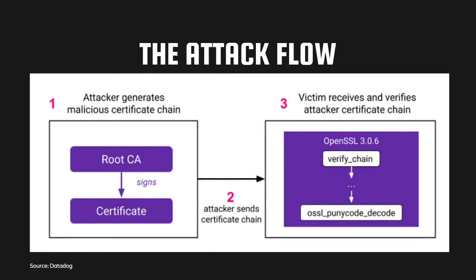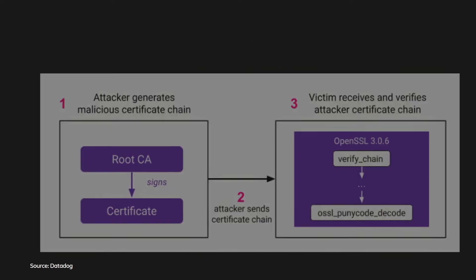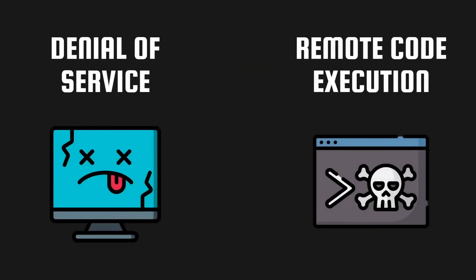There are a few criteria that must be met before exploitation. First, we need a malicious certificate that must include a name constraint field with punycode. Second, the victim must run the malicious certificate in OpenSSL, which is verified by an internal function. Post verification, the OSSL punycode decode function should run. Currently, it is known that the exploit can be used to perform denial of service and may cause remote code execution, but there is currently no proof of concept for the RCE.